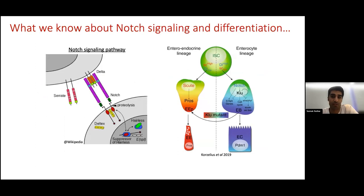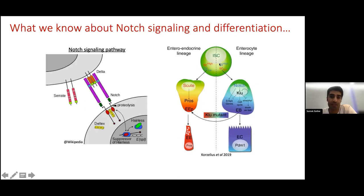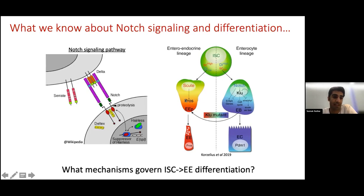To give a brief background to the notch pathway in flies: upon the delta ligand binding to the notch receptor, a proteolytic event takes place, which results in the notch intracellular domain translocating to the nucleus, to then interact with various transcription factors and regulate target gene expression. We also know that high delta in stem cells results in their differentiation towards enterocytes, and that the transcription factor clumpfus is important for this process. However, the differentiation program of the enteroendocrine cells is not very well understood.